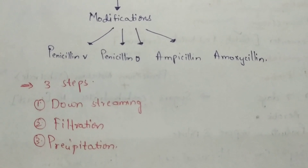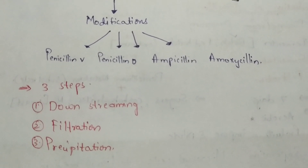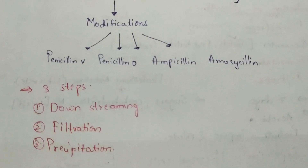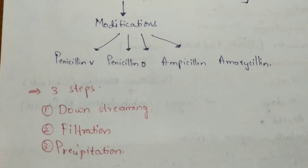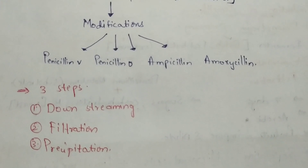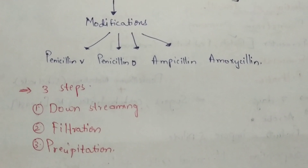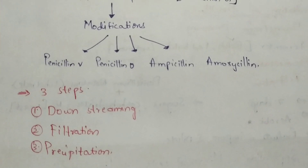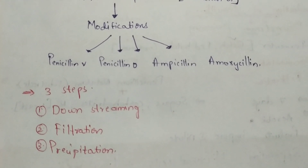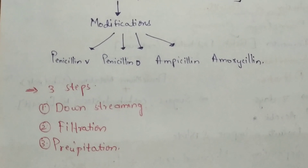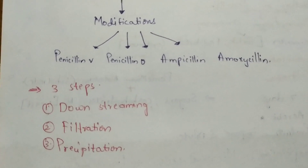After downstream processing, the product gets filtered in the filtration process, where separation of the liquid takes place. After separation, precipitation immediately takes place with the help of potassium salts. This is how the downstream process and penicillin extraction work.